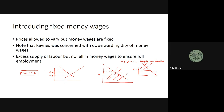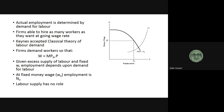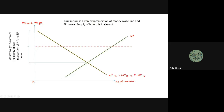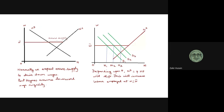Rigid money wage becomes important when you have a situation where the intersection of demand and supply occurs below the minimum money wage. So this is the minimum money wage, and we have excess supply here. Normally, we would expect workers to reduce the money wage, but at this point they are not going to accept the wage cut.